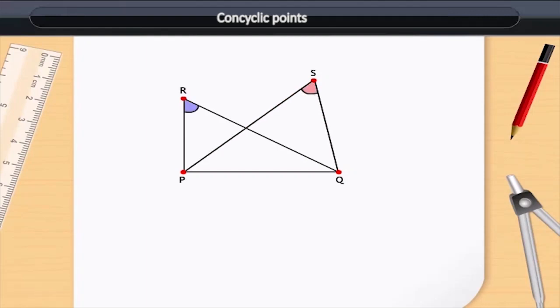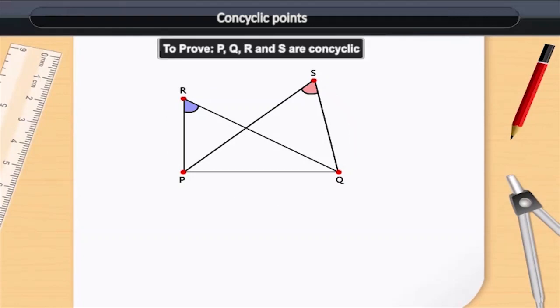If angle PRQ is equal to angle PSQ, then all the four points will be concyclic and the circle will pass through point S. Come on, let us prove it.